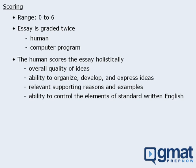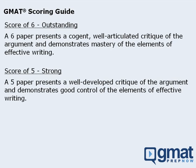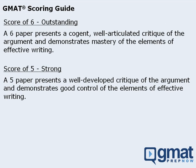To see how holistic scoring works, let's examine part of the scoring guide. Here we can see that an essay worthy of a 6 is one that presents a cogent, well-articulated critique, and an essay worthy of a 5 is one that presents a well-developed critique. So as you can see, in holistic scoring, the reader develops an overall impression of the quality of your essay, and then assigns a score accordingly.